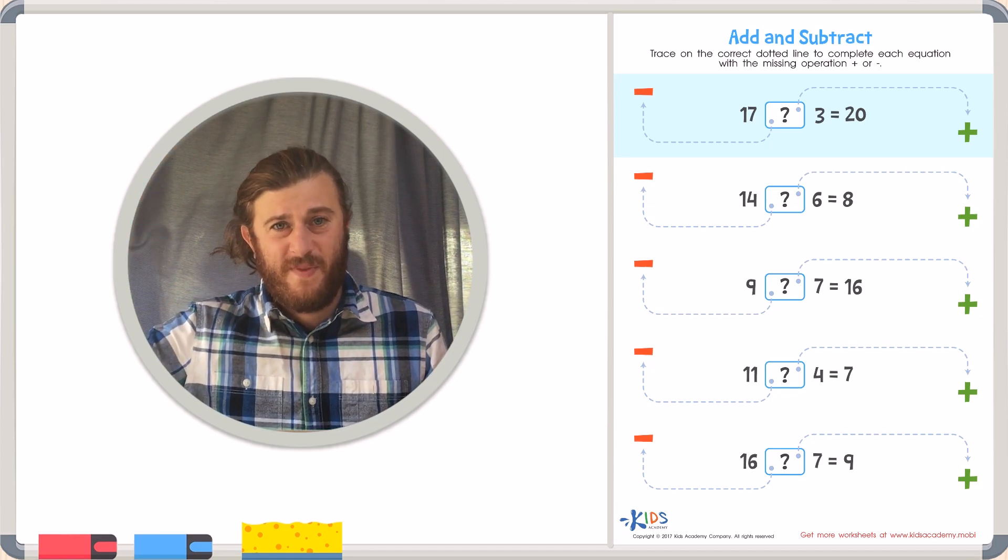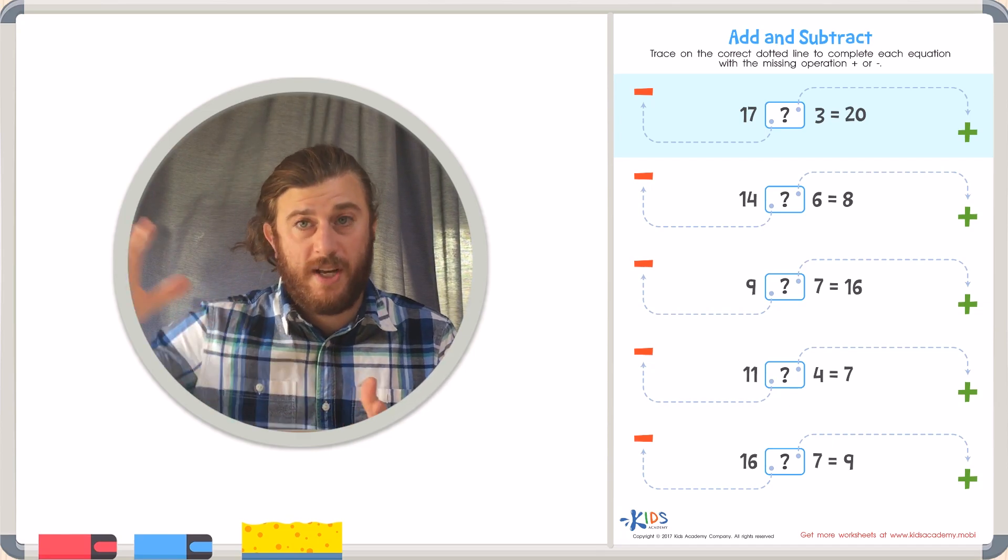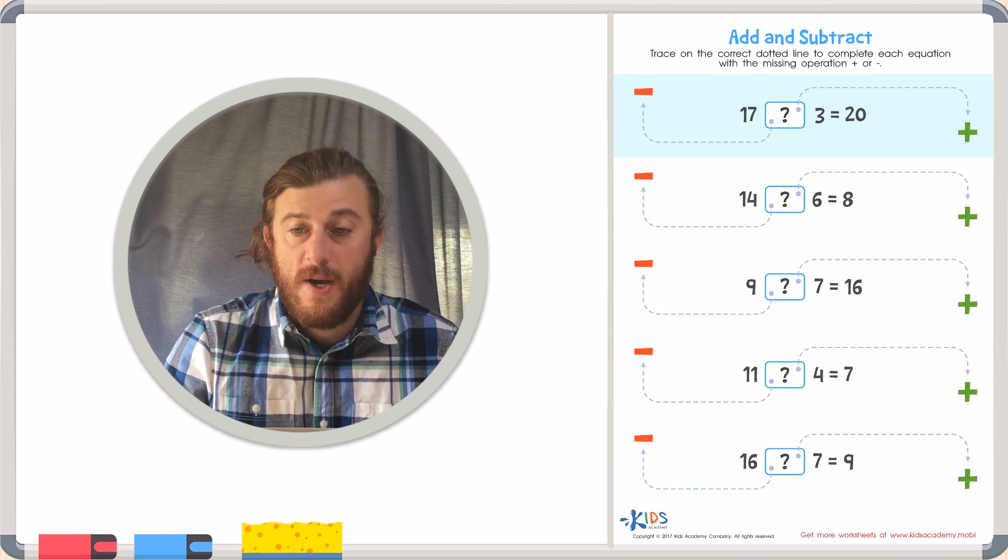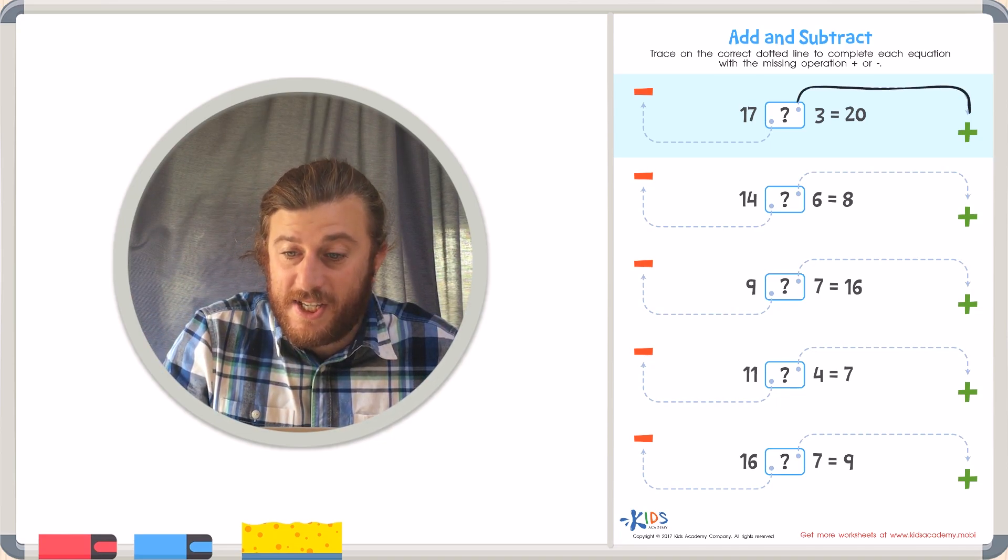Are we going to add 3 or take away 3? Well of course if we want to grow 17, make it bigger into 20, we're going to have to add. So let's trace that dotted line to the addition symbol.